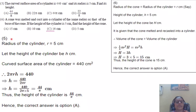So, radius of the cylinder is 5, height of the cylinder is h, and curved surface area which is given is 440 centimetre square.